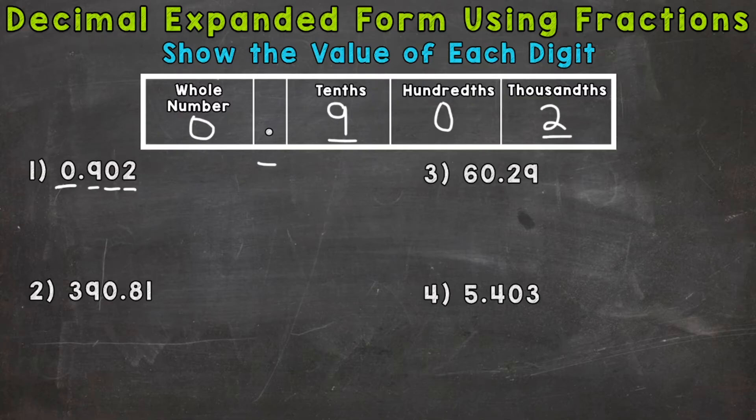So we know the nine has a value of nine tenths, and the two has a value of two thousandths. Now when it comes to writing these decimals in expanded form using fractions, there's actually two ways to do it. So I will do both ways for each of these four examples.